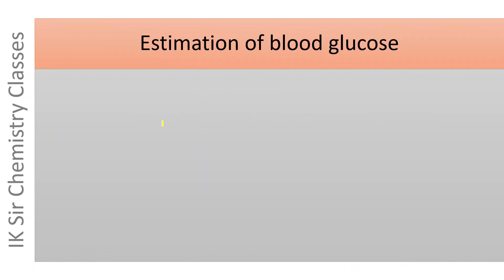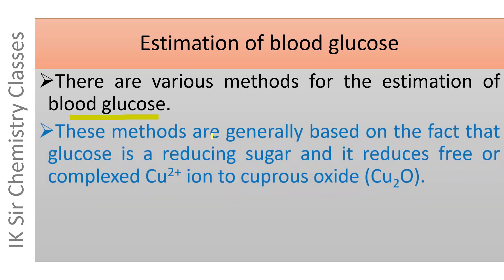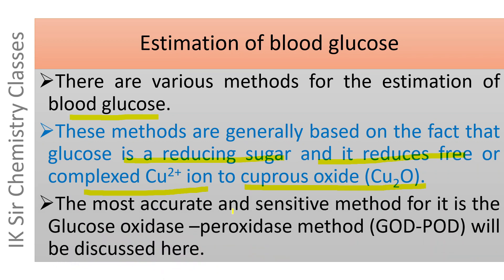Estimation of blood glucose. There are various methods for the estimation of blood glucose. These methods are generally based on the fact that glucose is a reducing sugar and it reduces free or complex Cu²⁺ ion to cuprous oxide, that is Cu₂O. The most accurate and sensitive method is the glucose oxidase-peroxidase method, which will be discussed here.